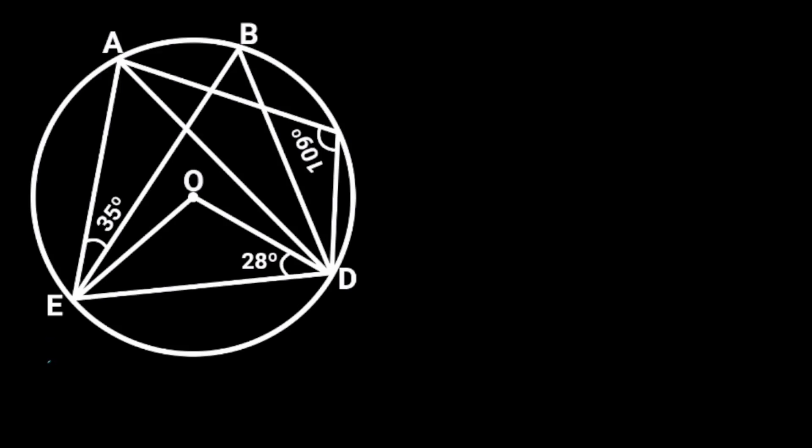In the diagram, ABCD and E lie in the circle center O. Angle AEB is 35 degrees, angle ODE equals 28 degrees, and angle ACD equals 109 degrees.